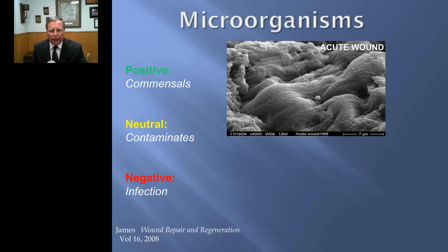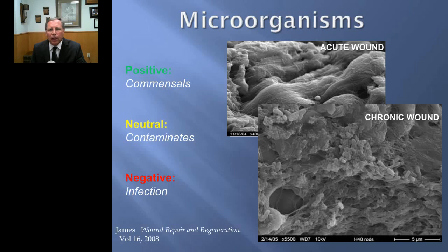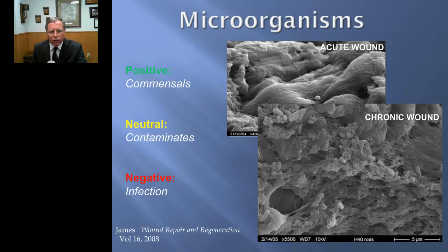Bacteria can also do a negative thing. This image from a diabetic foot ulcer in our 2008 publication shows cocci, rods, different sizes and shapes — truly polymicrobial. The web material sticking to the wound surface is host material: fibrinogen polymerized to fibrin that helps bacteria stick. This is only about 10 to 15 microns thick — biofilm does not have to be thick. This is a biofilm by anybody's definition.